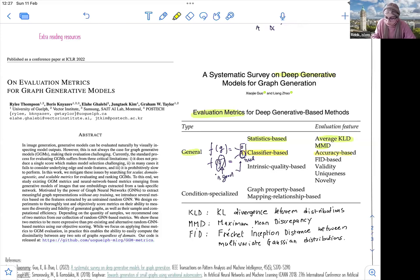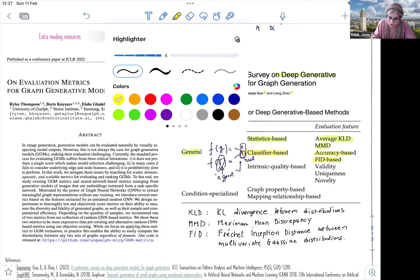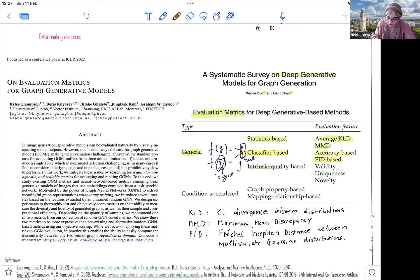So you can use two metrics for classifier-based, the accuracy, classification accuracy, and the FID, which is the Frechet inception distance between different distributions also. So in terms of biological data, we have what we call intrinsic quality based. So you can see that this is also problem-dependent or data-dependent.